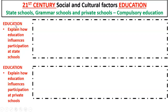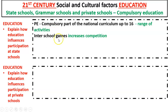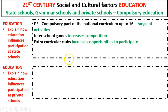Starting with state schools, which most people will have attended. PE is a compulsory part of the national curriculum up to the age of 16, meaning you get a range of activities such as football, dance, and gymnastics. State education also provides opportunities for inter-school games and fixtures, which increases competition and participation. There are also extracurricular clubs — lunchtime or after-school — which further increase the opportunity to participate.